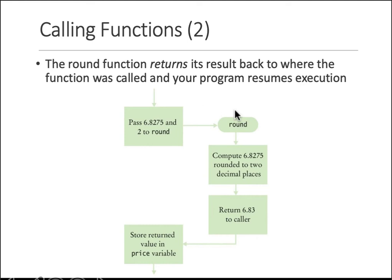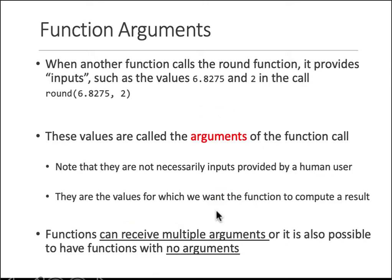So that is what the calling of the function is - that you call the function with a name and you get a result back. The things that you provide to the function are called arguments. In this case, the round function has two arguments.